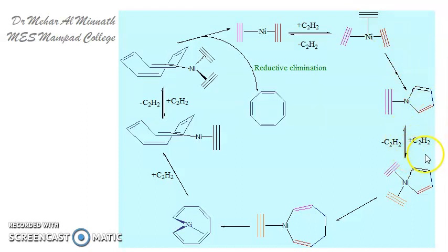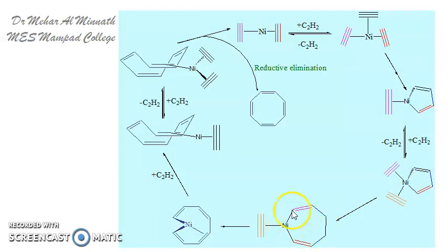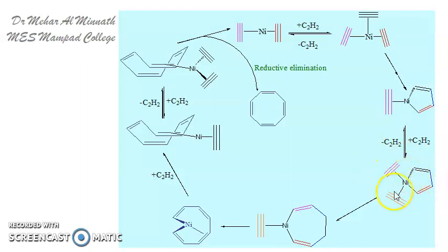Again, one more acetylene molecule is added and coordinates to the nickel. So you have the five-membered ring with nickel, and the next incoming acetylene coordinates to the nickel, then cyclization happens. A seven-membered ring is formed — you had a five-membered ring earlier and two more carbon atoms are added to give a seven-membered ring. Remember, one of the members is always nickel, not carbon.